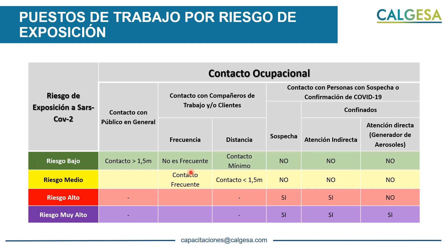Otro ejemplo para riesgo bajo: en un restaurante, si el cocinero trabaja solo en la cocina, no tiene contacto mayor a metro y medio con otro cocinero, no hay contacto frecuente, el distanciamiento es mínimo, no hay sospecha de COVID, no hay atención indirecta y no hay generador de aerosoles. Entonces estaría en riesgo bajo. Normalmente todos los puestos de trabajo de atención al cliente están en riesgo medio porque tienen cercanía con el cliente.